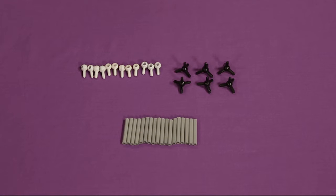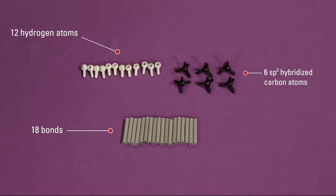To build a cyclohexane model, you need six sp3 hybridized carbon atoms, the black atoms with four prongs, 18 bonds, these are your gray tubes, and 12 hydrogen atoms, the white atoms.